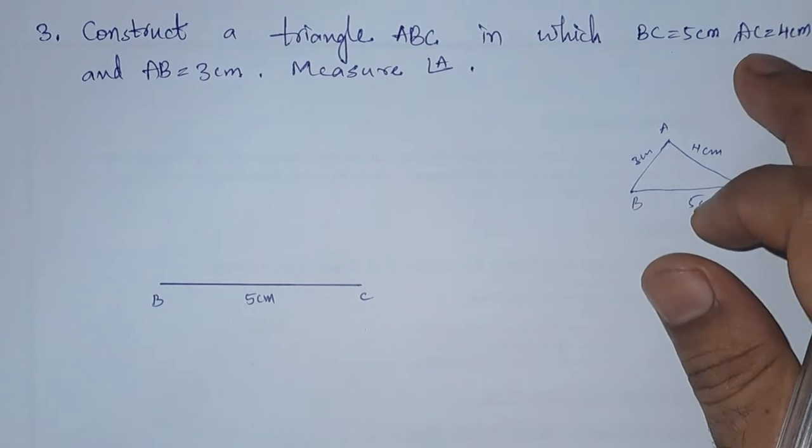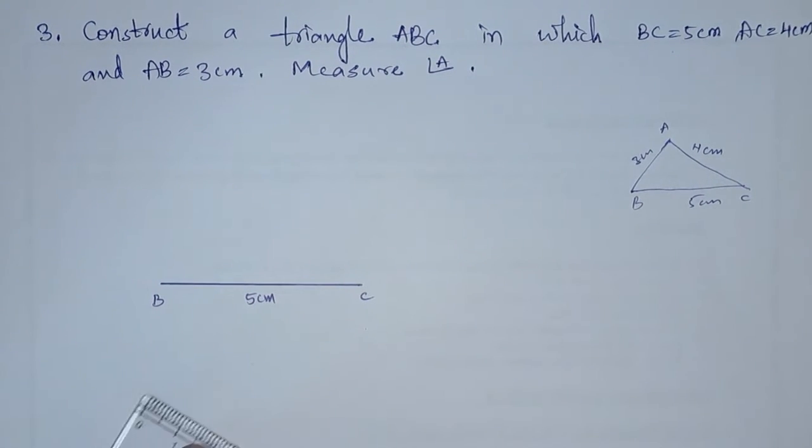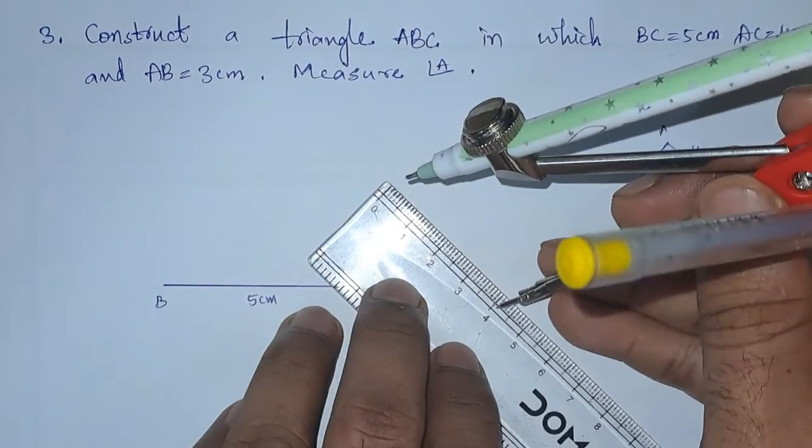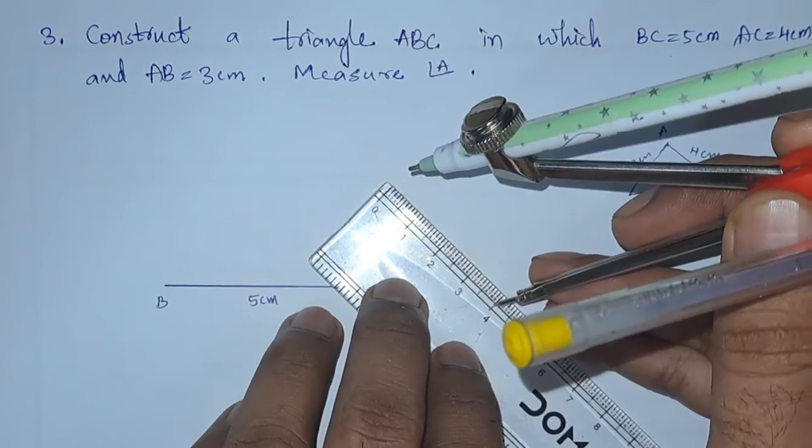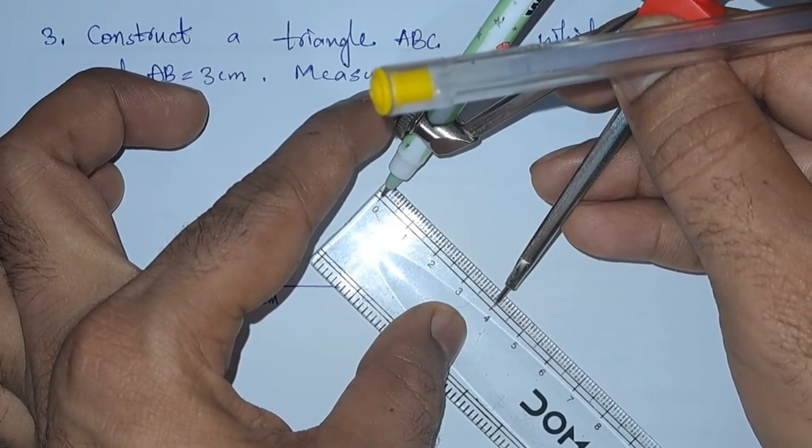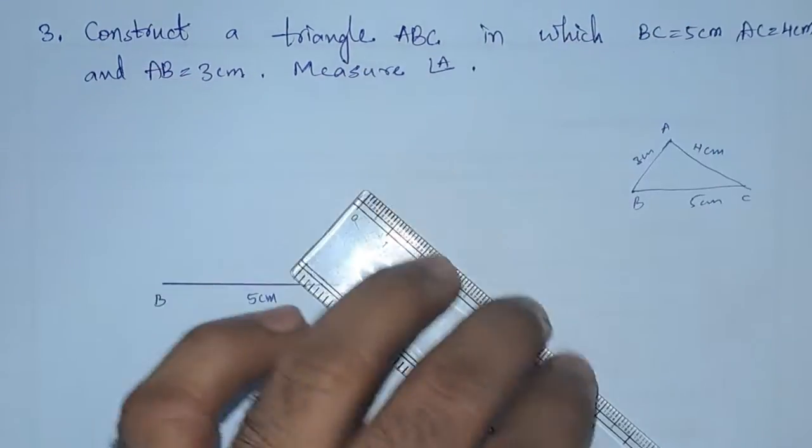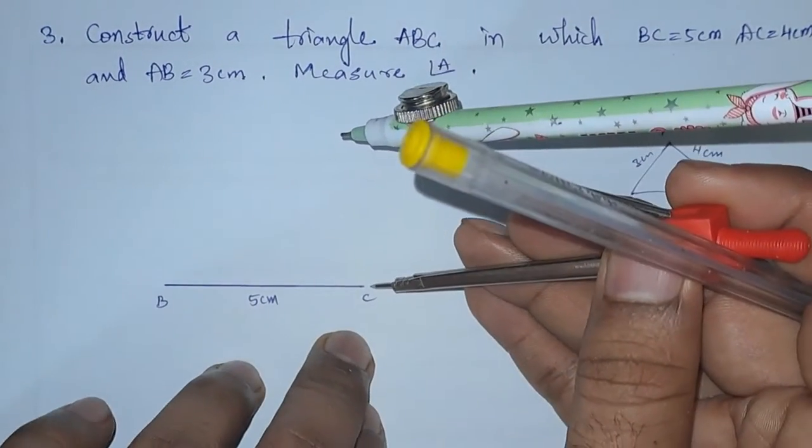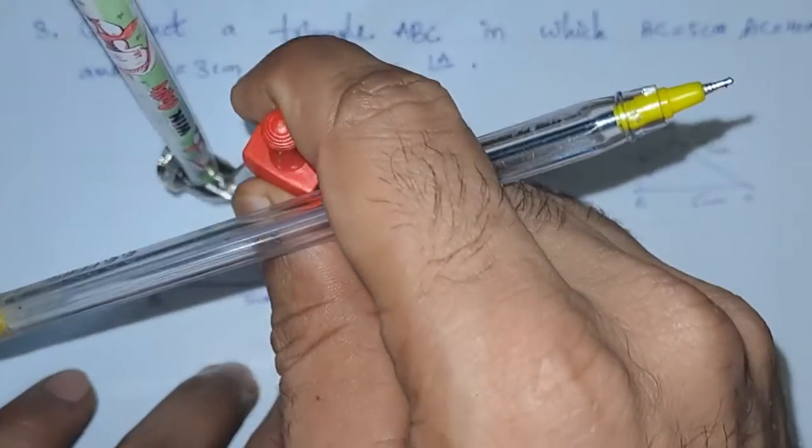Next, AC equals 4 centimeters. So let us take the radius 4 centimeters on the compass and from C, we are going to draw an arc.